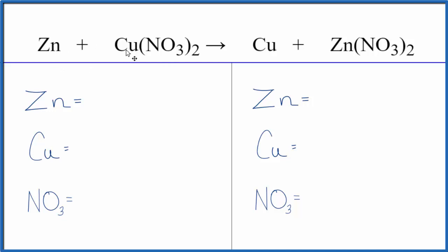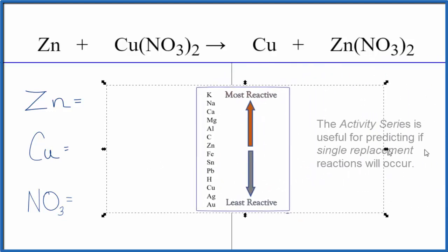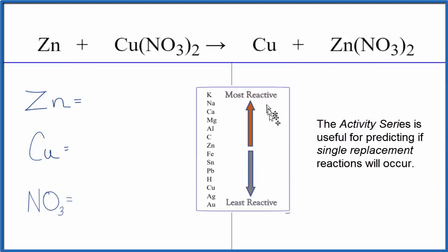The zinc will replace the copper, push the copper out so it's by itself. But let's see if it's going to happen. We can check on the activity series to see if the reaction does take place, if the zinc pushes the copper out.